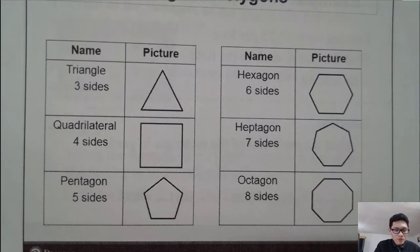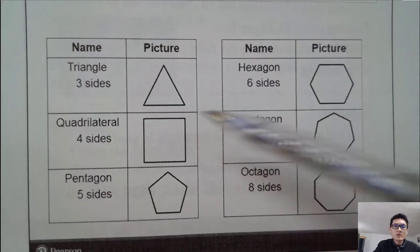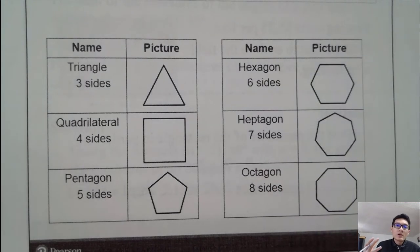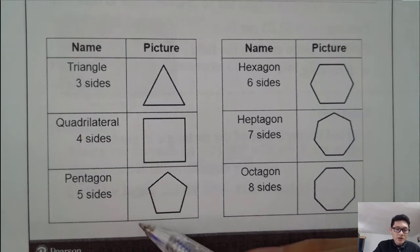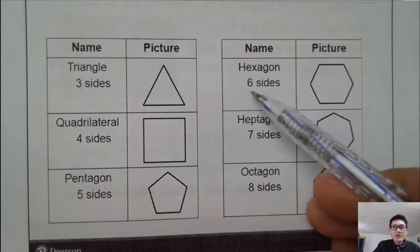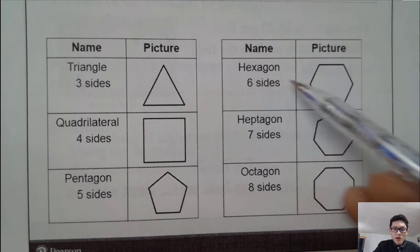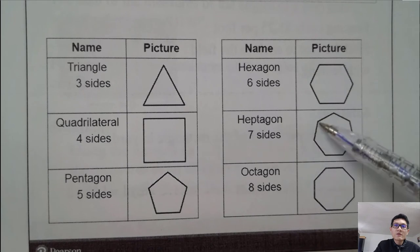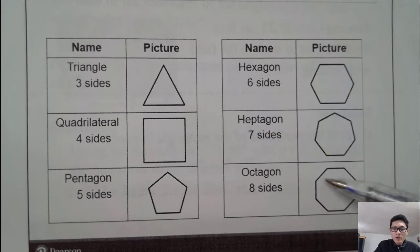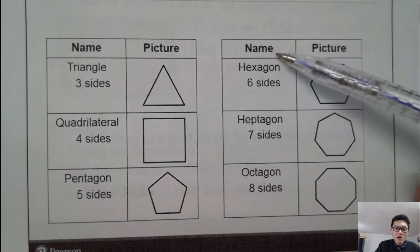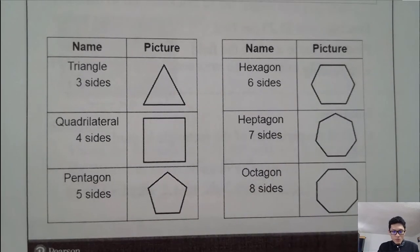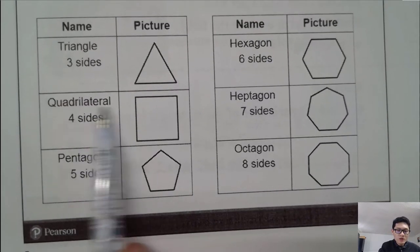For regular polygons: three sides gives a triangle, and the sum of all angles in a triangle is 180 degrees. Four sides gives a quadrilateral, five sides gives a pentagon, six sides gives a hexagon, seven sides gives a heptagon, and eight sides gives an octagon. Those are the special names for polygons with three to eight sides.